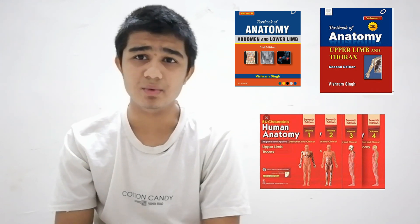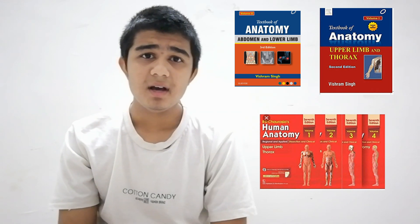For Gross Anatomy, which is divided into parts like upper limb, lower limb, thorax, abdomen, and Neuroanatomy, you can use both Vishram Singh and BDC. Vishram Singh has better diagrams so concepts become clearer, while BDC has MCQs and questions at the back. Both books are good — you can purchase and use either.